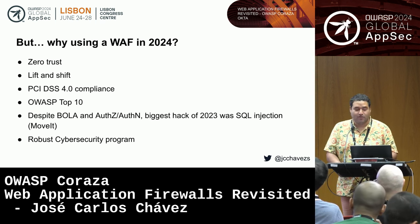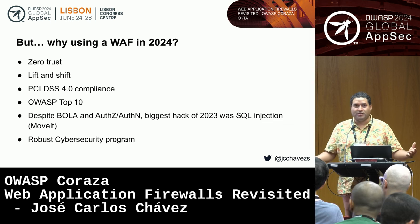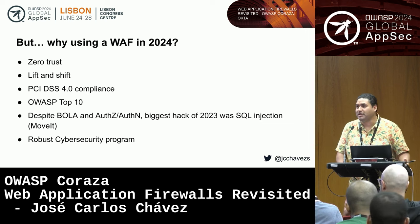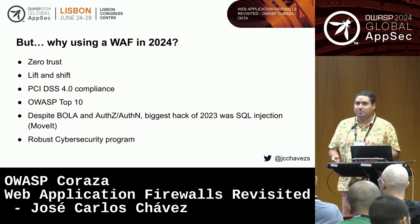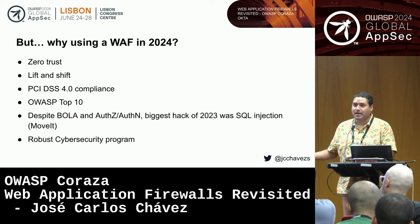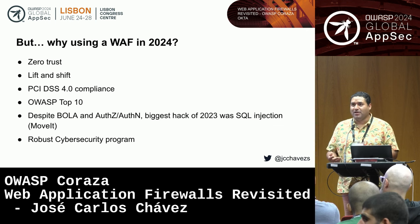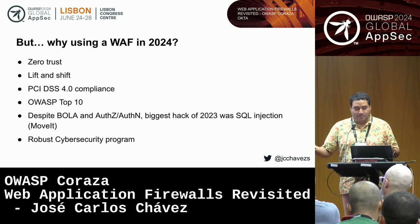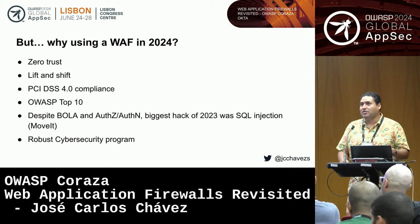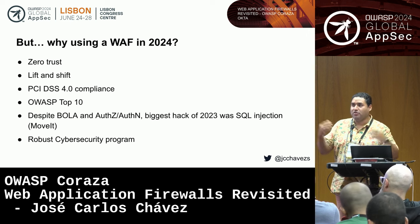PCI DSS 4.0 compliance, which will be enforced next year, requires a WAF as part of a broader security strategy. There is also the OWASP Top 10 — though for APIs it's mainly about BOLA, authorization, and business logic that a WAF cannot fully address. But surprisingly, the biggest hack of 2023 was a SQL injection. So WAF is still relevant and still needed — maybe not the single point of control, but it should be part of a broader, multi-layered security strategy.